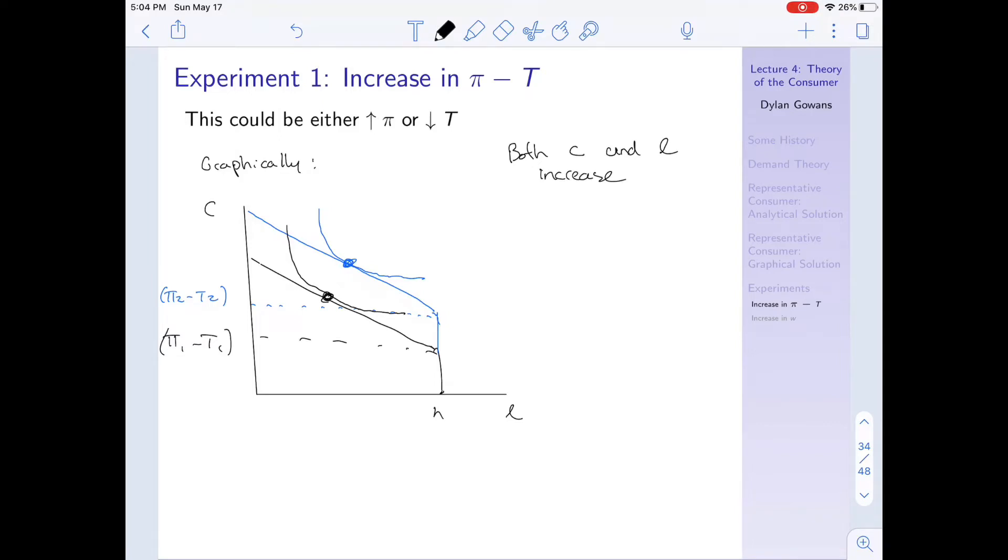Why? Well, the reason is because of one of the assumptions we made before, which is that consumption and leisure are both normal goods. And remember we said that the definition of normal goods is when my income increases, and this is one such case, when my income increases I consume more of consumption because it's a normal good, and I consume more of leisure because it's a normal good.